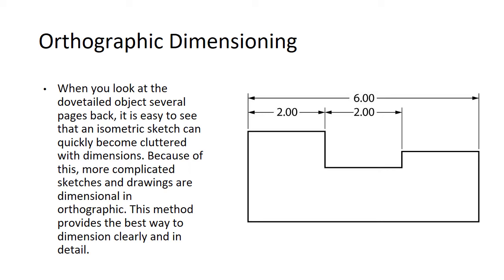Each view gets its own dimension. So if we're looking at it from the front, that side gets dimensions. If we're looking at it from the side, that side gets its own dimensions. If we're looking at it from the top, that side gets its own dimensions. We're not trying to do it all in one view like we would with an isometric drawing. So when we're talking orthographic, we're talking when we break it out into three views.